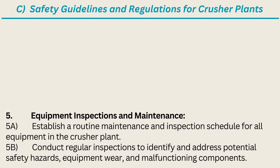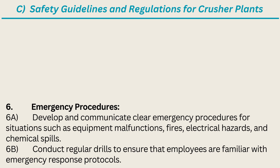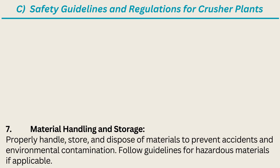5. Equipment inspections and maintenance. Establish a routine maintenance and inspection schedule for all equipment in the crusher plant. Conduct regular inspections to identify and address potential safety hazards, equipment wear, and malfunctioning components. 6. Emergency procedures. Develop and communicate clear emergency procedures for situations such as equipment malfunctions, fires, electrical hazards, and chemical spills. Conduct regular drills to ensure that employees are familiar with emergency response protocols. 7. Material handling and storage. Properly handle, store, and dispose of materials to prevent accidents and environmental contamination. Follow guidelines for hazardous materials if applicable.